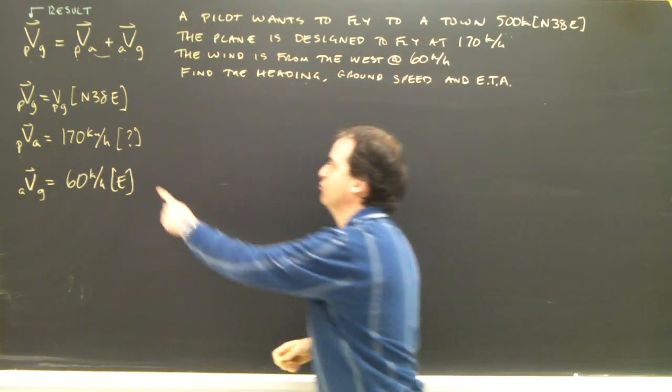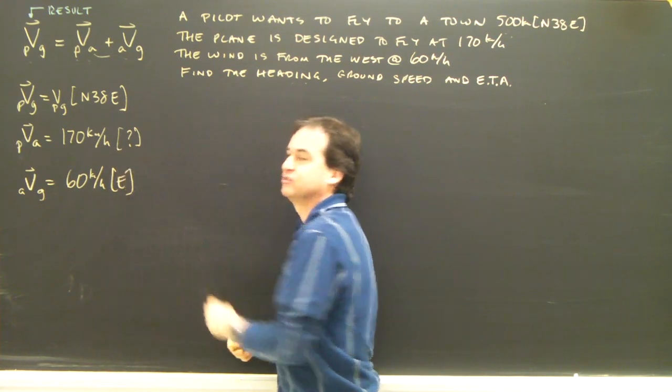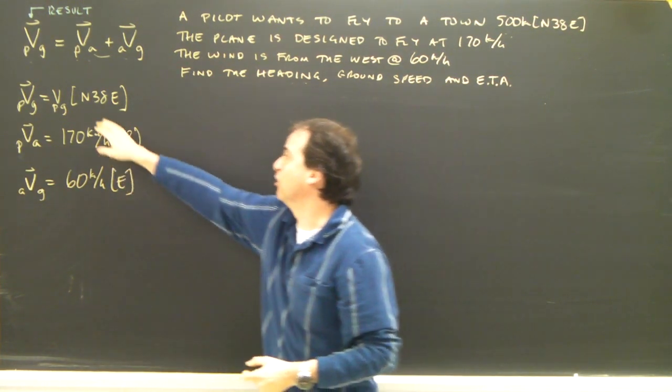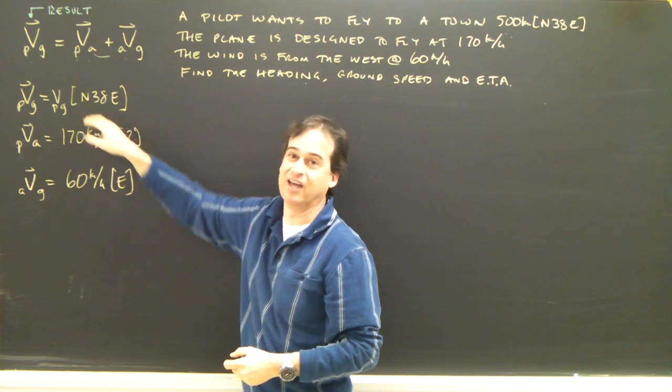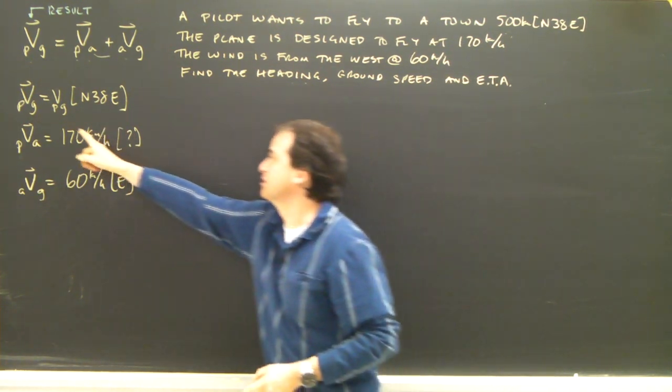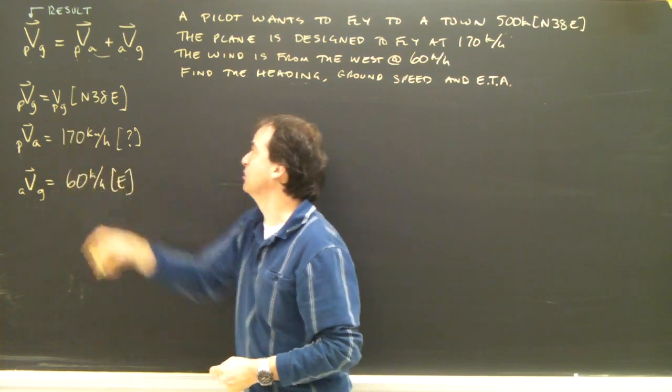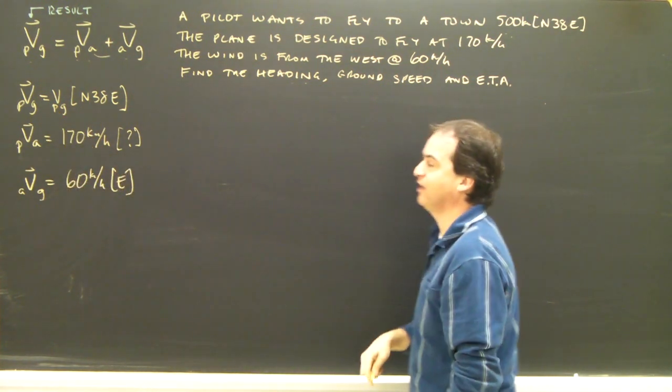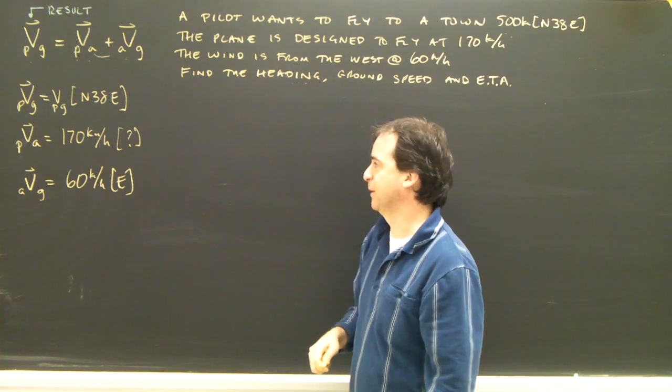Which direction do you point a plane if you're flying at 170 kilometers per hour and you want to end up flying in that direction? So the ground speed, well that's the speed of the plane relative to the ground, so we need that. And the ETA, estimated time of arrival, how long is this flight going to take?